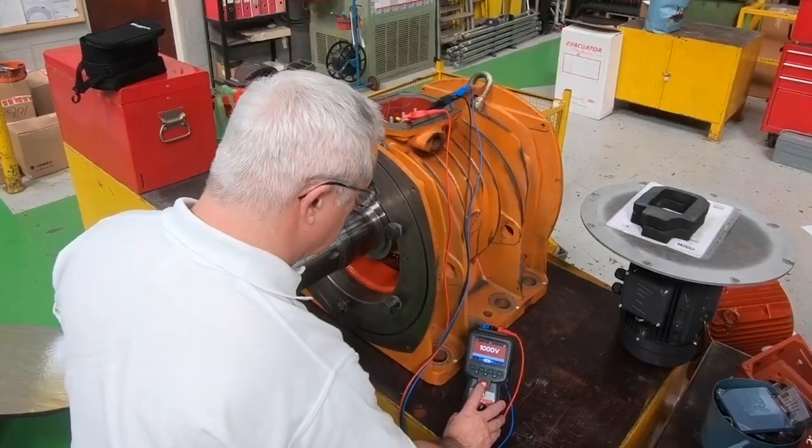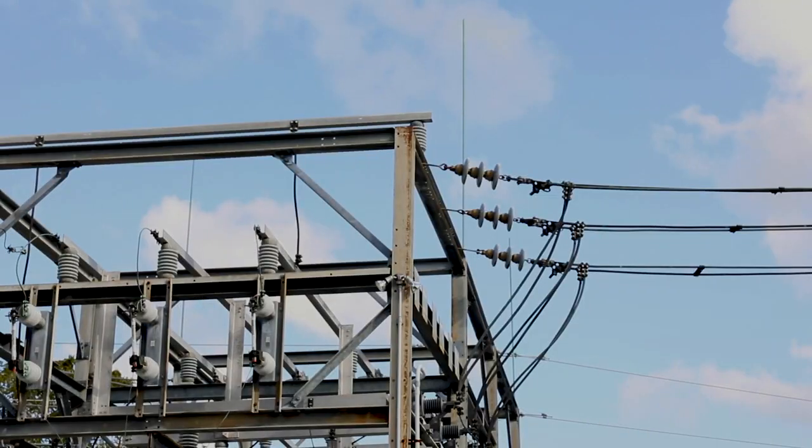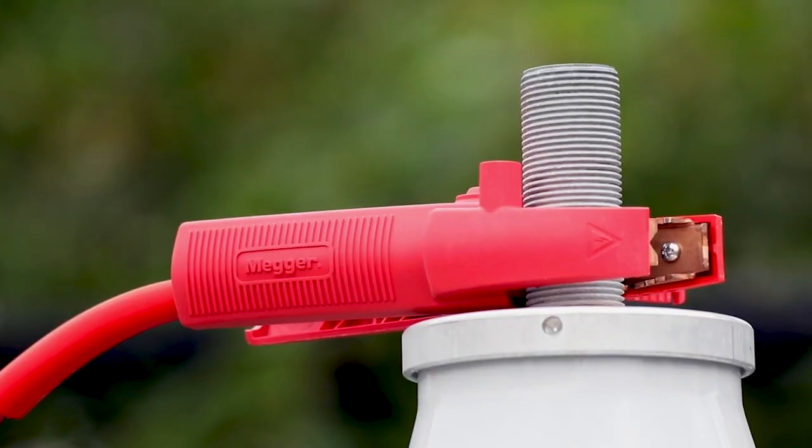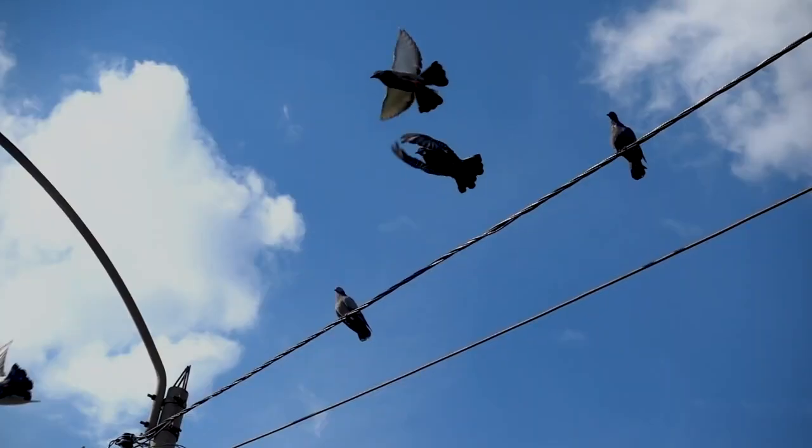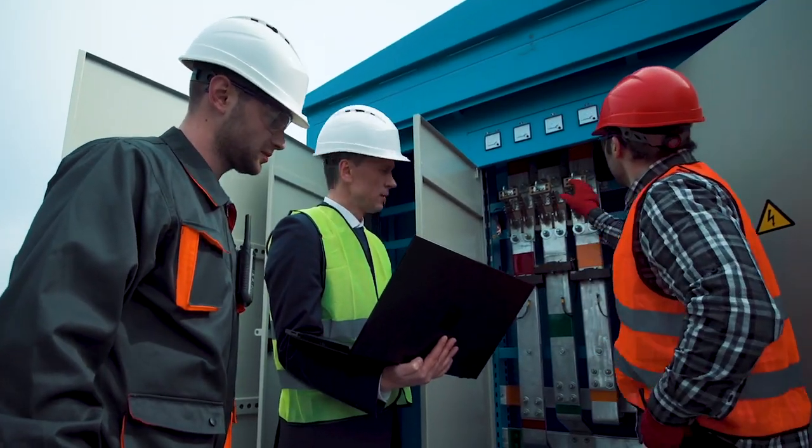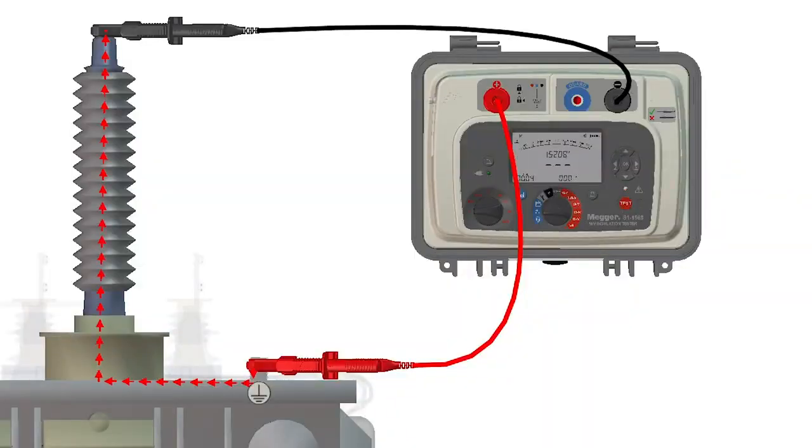Checking the insulation integrity of assets such as cables, motors, or bushings requires tests to be conducted at high voltages in order to measure minute currents. If an asset surface is contaminated with dirt or moisture, it will produce a surface leakage current that will distort results.